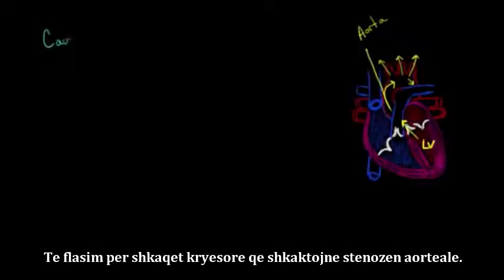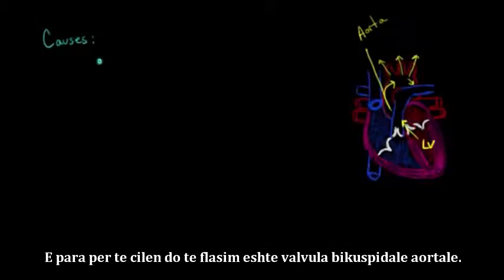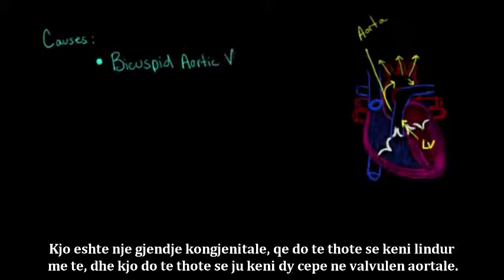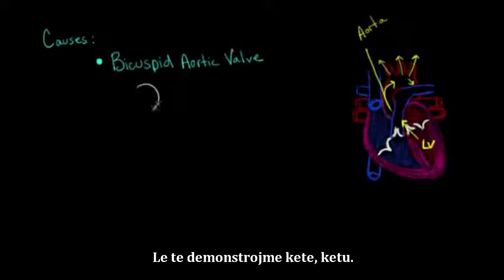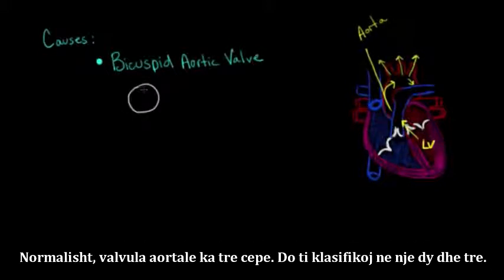Let's talk about some of the major causes of aortic stenosis. The first thing we want to talk about is having a bicuspid aortic valve. This is a congenital condition, meaning you're born with it, and this means that you only have two cusps to the aortic valve. Normally, the aortic valve has three cusps — one, two, and three.